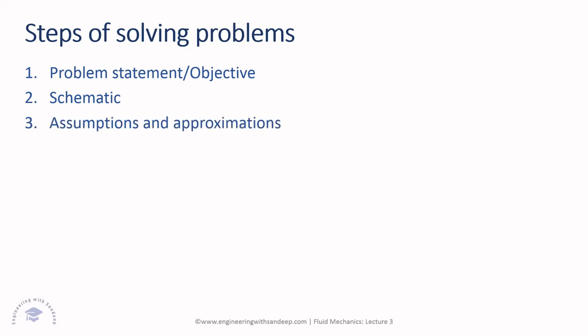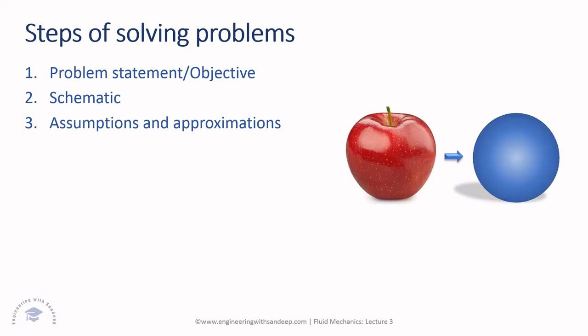In the next step, make assumptions and approximations. As engineers, we are not interested in precision like scientists — we need engineering solutions which are practical in nature. For example, here you can see an apple which is complicated in shape, but if we are solving heat transfer from it, you can assume it is spherical.